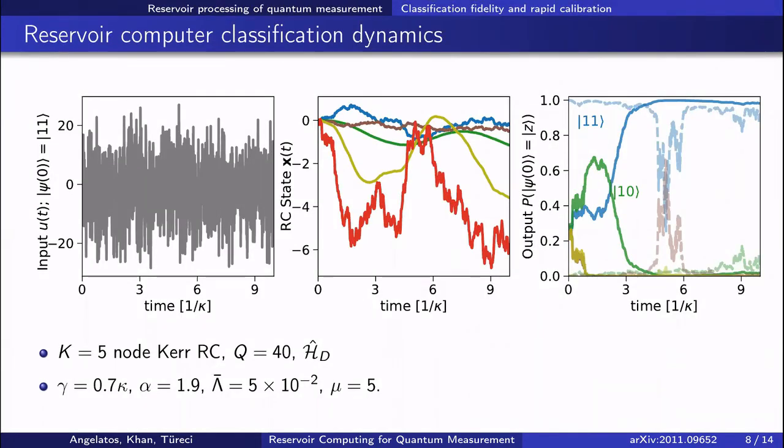All right, so how does this reservoir computer work? Well, here is a measurement current input into a five-node Kerr network. The evolution of the measured quadratures in response to this noisy signal, as shown in the center plot, and the output of our reservoir computer, shown to the right, quickly converges to the correct initial state label.